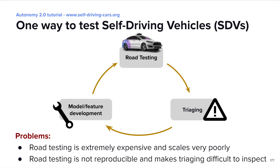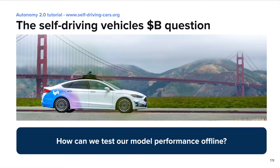Second, all this driving experience is not reproducible. Testing how a true model will behave in the exact same situation is just not possible, because we can't control the world around us to reproduce the situation over and over again. So we come to what we call the self-driving vehicle's many billion question: how can we test our model performance offline? Because if we know this, we can test hundreds or thousands of features in a very short time. We strongly believe that simulation is the answer.